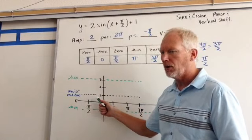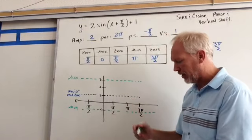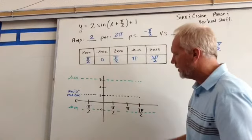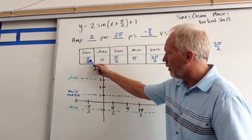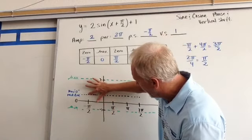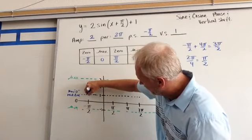So now I have this new mid line at 1. I'm going to pretend like that's where my new 0 is, and I'm going to plot my points based on that. We start with negative pi over 2 at a 0, right here.